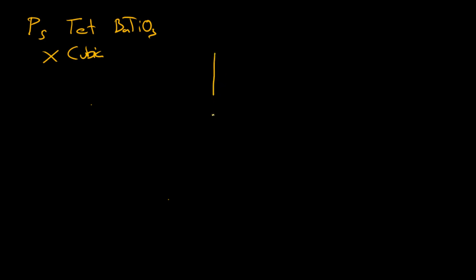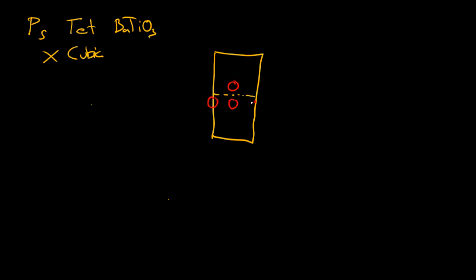We're going to try barium titanate. So let's draw our rectangle, which is going to be extremely exaggerated. We'll draw that middle line, the titanium above, and the three oxygens below on the other side. Looking at the box, there are going to be four oxygens on the perimeter.